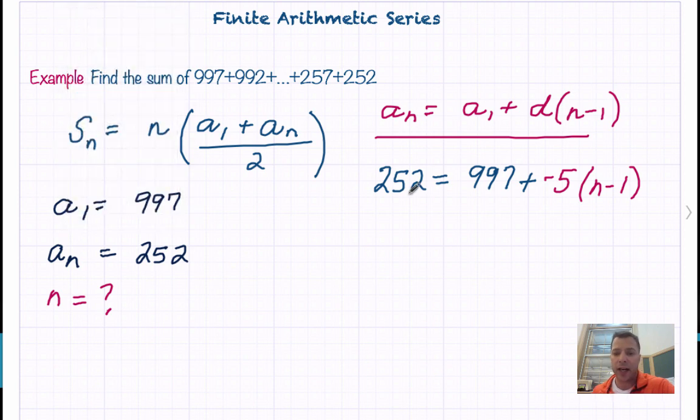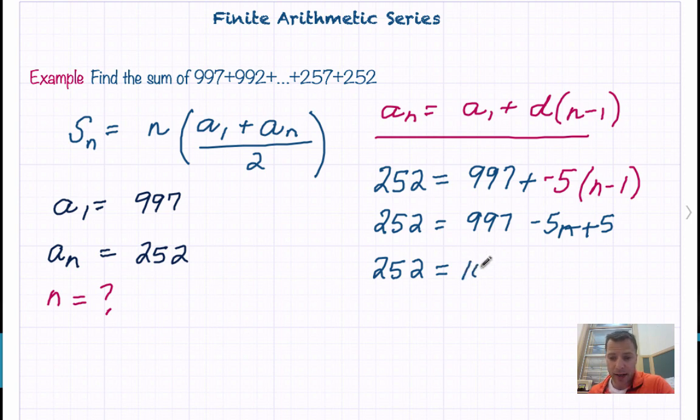So now we're going to simplify this and solve for n. We have 252 equals 997 minus 5n plus 5. So we have 252 equals 1002 minus 5n, because I can combine like terms. So I get negative 750 when I subtract 1002 from both sides, equals negative 5n.